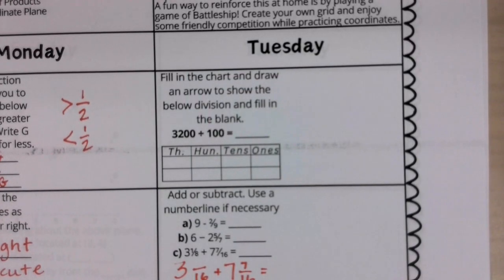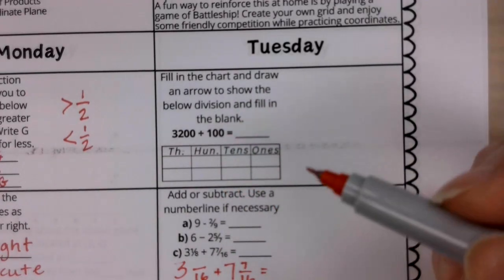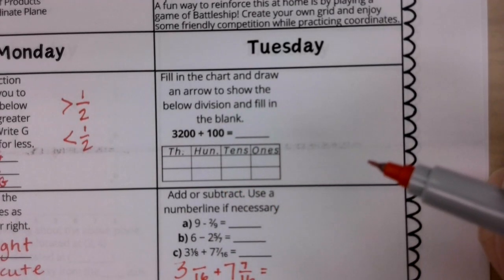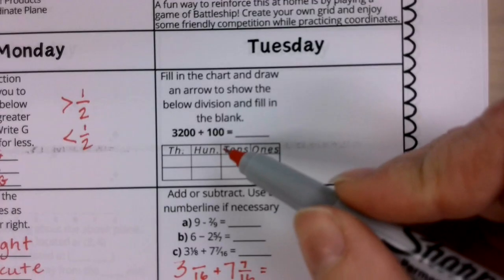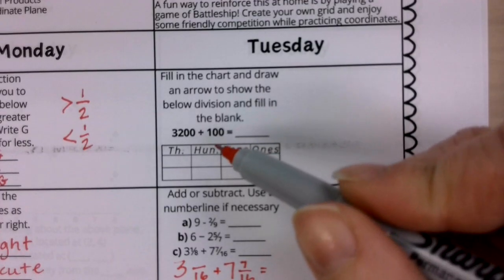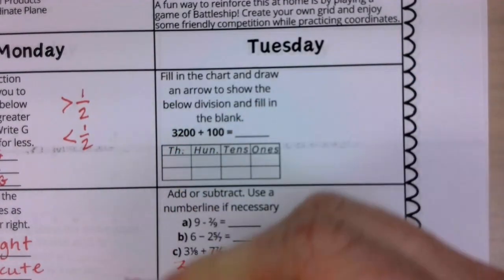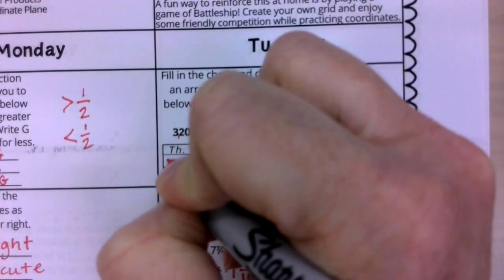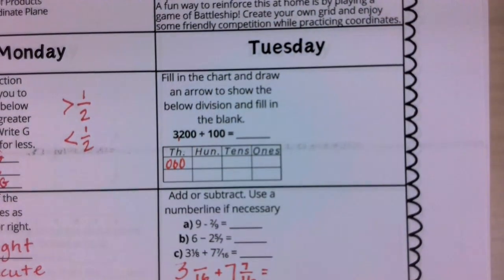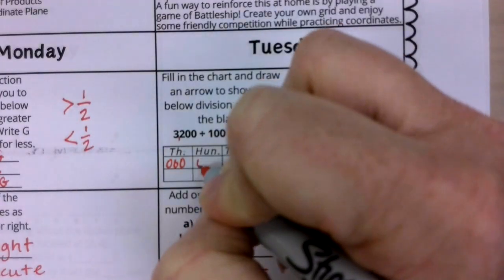Good morning, mathematicians. It is Tuesday of week 31, and we're starting with some dividing by powers of 10. In this case, we're actually dividing by 100. When I start with this number, 3,200,